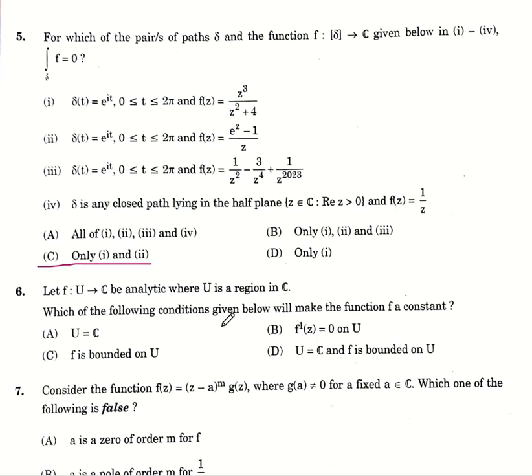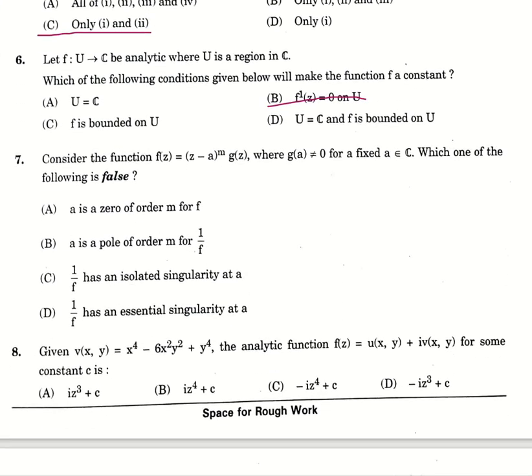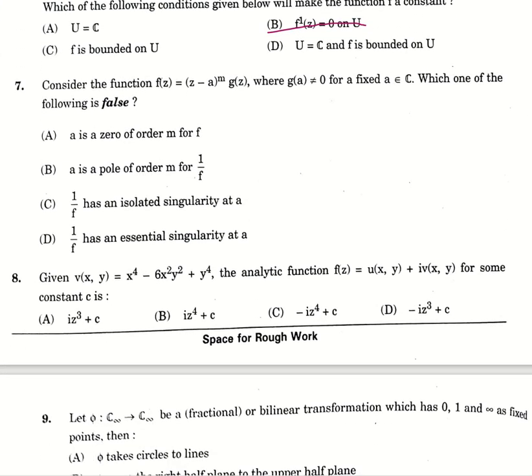Sixth question, f is a function from U to C, analytic where U is a region in complex number C. Which of the following condition will make the function f a constant? Option number B. Seventh, consider the given function f of z equals z minus a power m g of z where g of a is not equal to 0. Which one of the following is false? Option number C, 1 by f has isolated singularity at a.